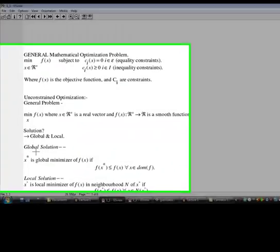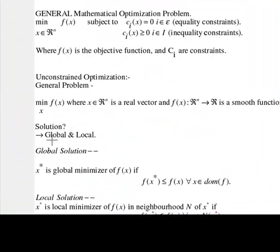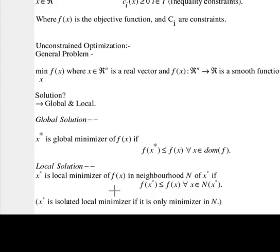The solutions for our problem are defined into two categories: one is global and the other is local. There are categories for local as well, like strict local or weak local minimizer. A global solution: x* is a global minimizer of f(x) if f(x*) is less than or equal to f(x) for all x belonging to the domain of f. So it's like a unique minimizer of our function.